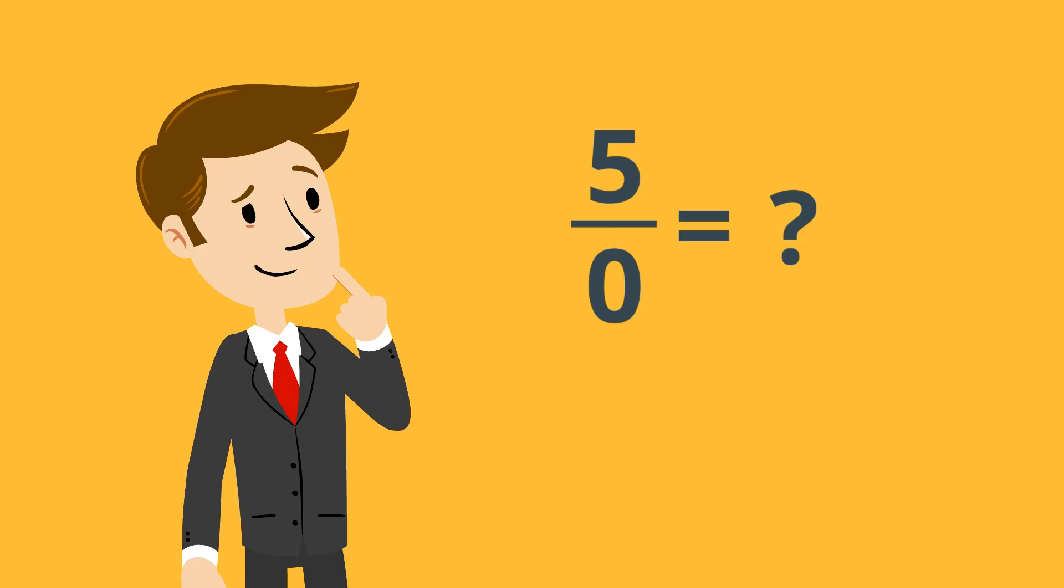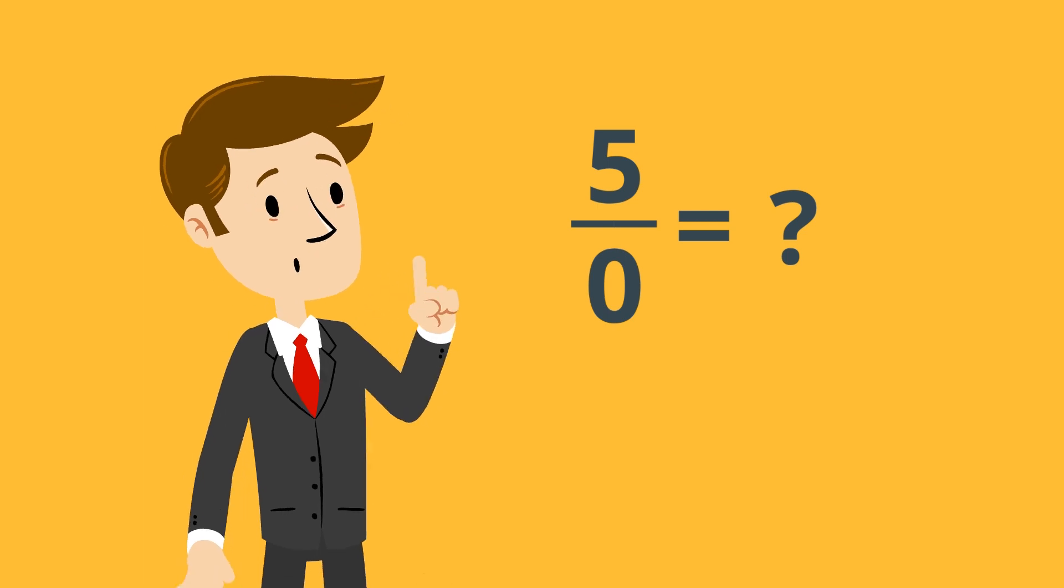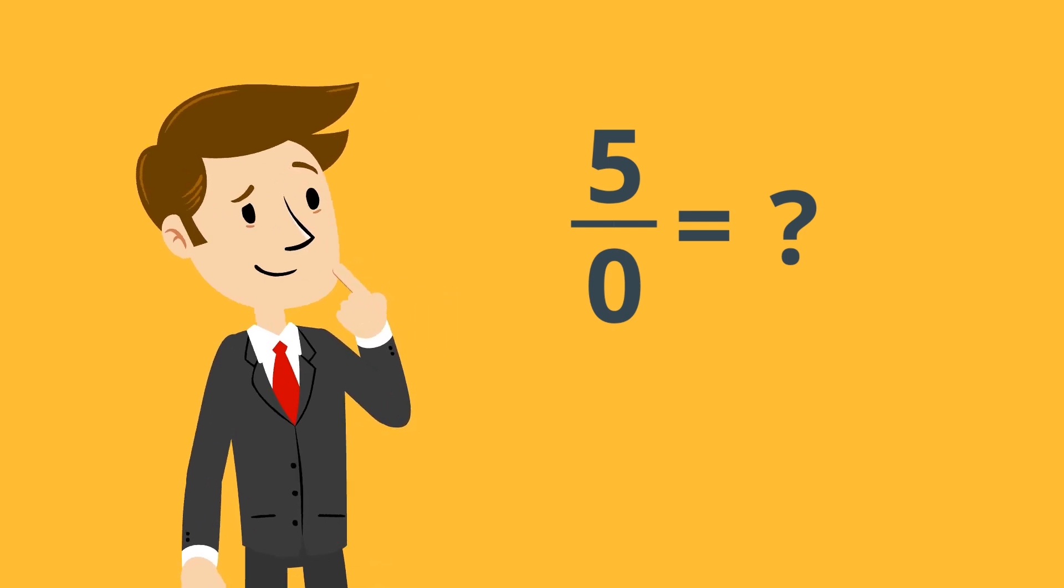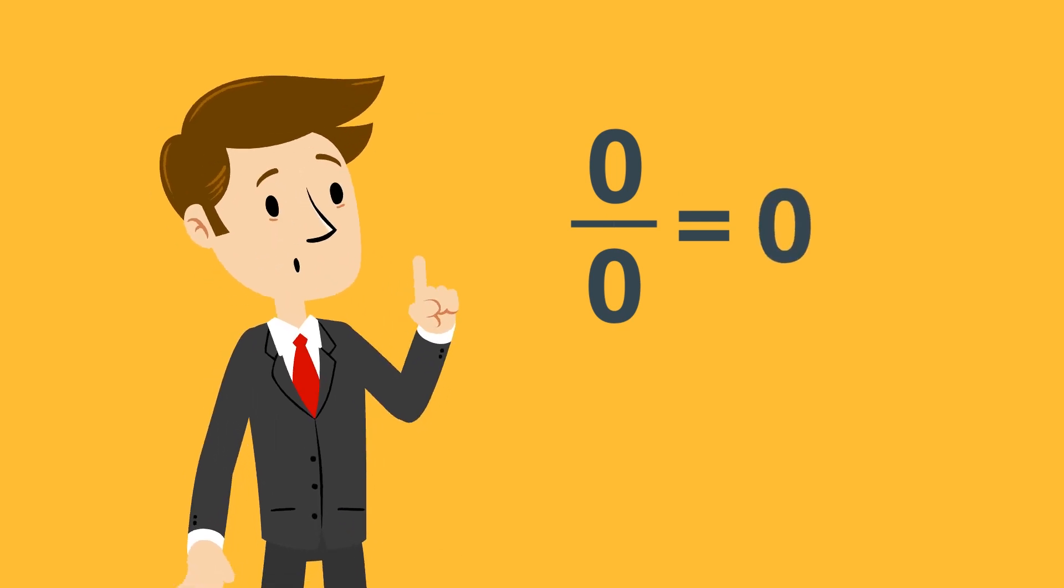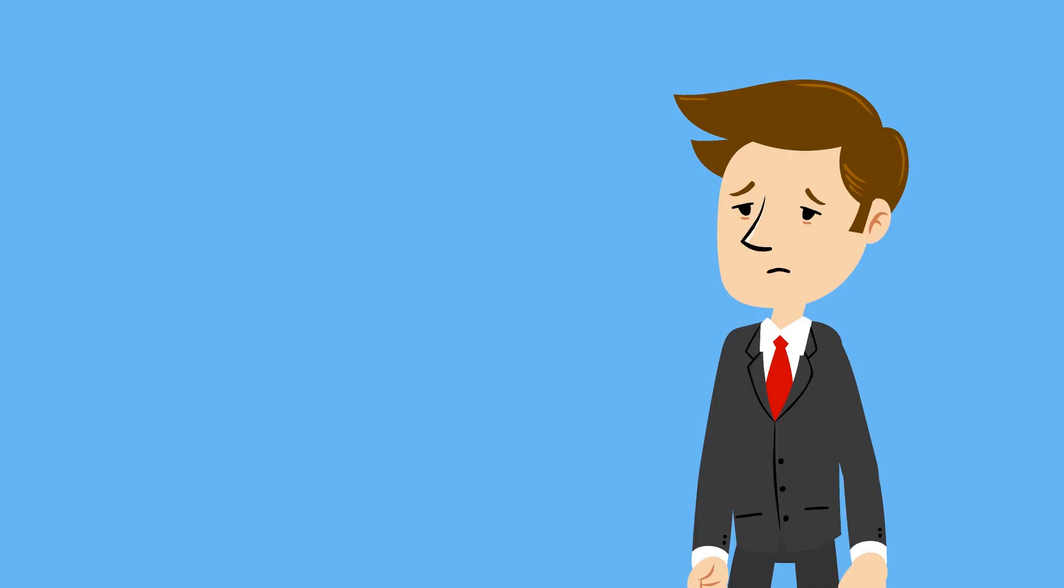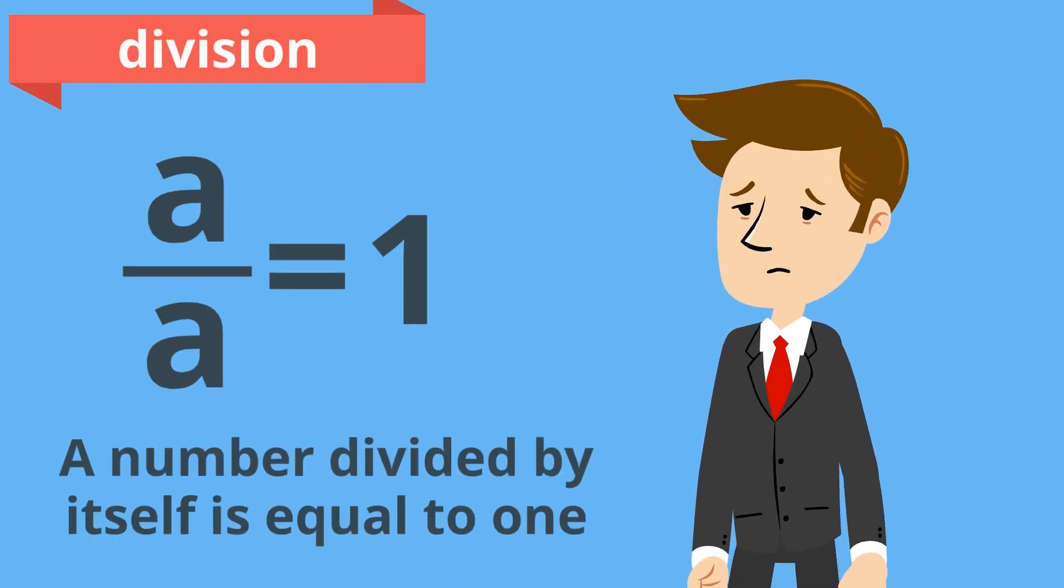Well, this is certainly a problem with something like five divided by zero. But maybe we can find something that works for zero divided by zero. Maybe in this one case, we can let it equal zero. Unfortunately, this still doesn't work. The rule that doesn't fit now is our rule that says any number divided by itself should equal one.